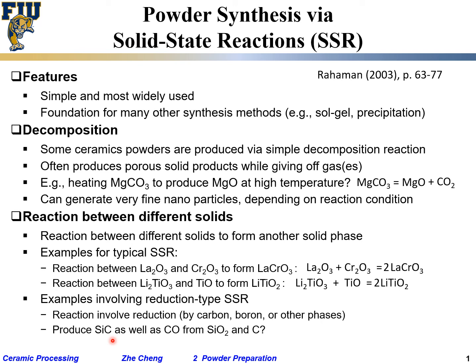Silicon carbide (SiC) plus CO (byproduct) are produced from the reaction between silicon dioxide (SiO₂) and carbon (C). As written, the reaction is not balanced. I already have one silicon on each side, so that's fine. There are two oxygens on the left side, so I need a factor of two in front of CO. Then on the right, I have one carbon in SiC plus two in CO, so I need a factor of three in front of C on the left. Balanced.